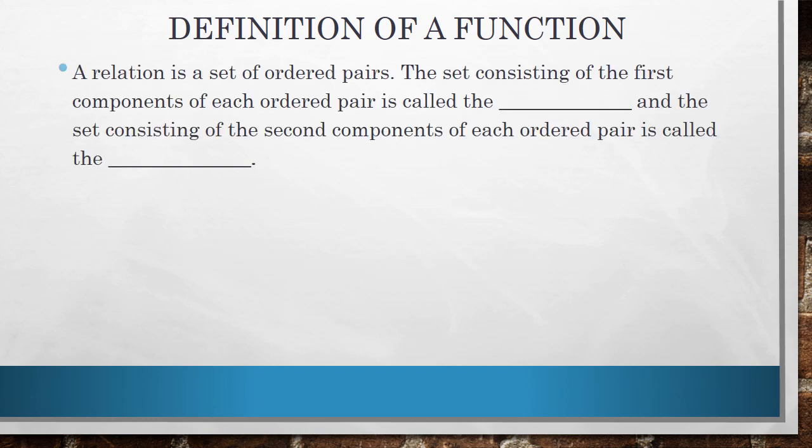The first is what a relation is. A relation is a set of ordered pairs. The set consisting of the first components of each ordered pair is called the domain.